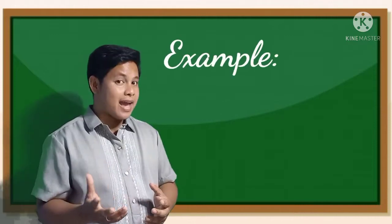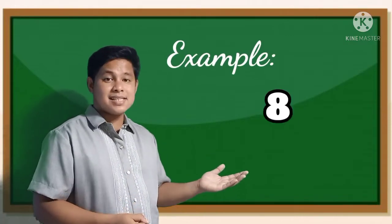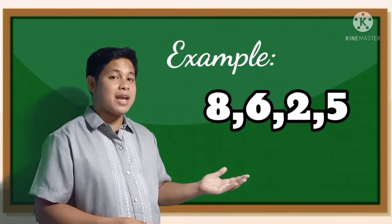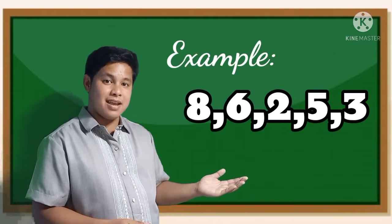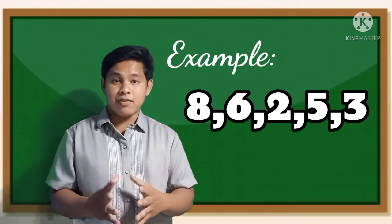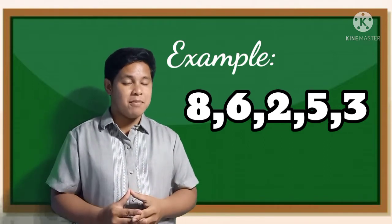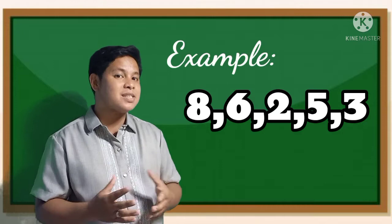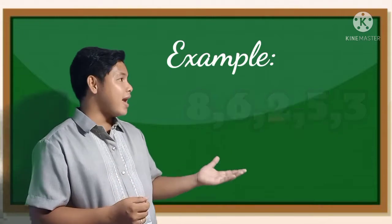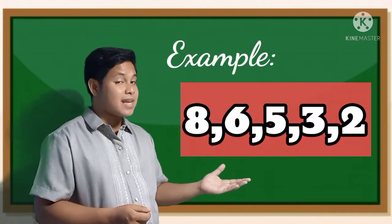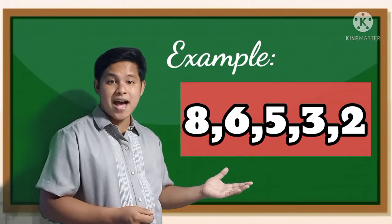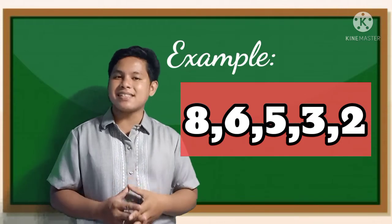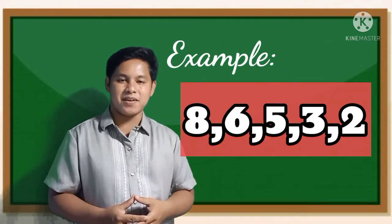Again, I have here 8, 6, 2, 5, and 3. If I arrange these numbers in descending order, it must be 8, 6, 5, 3, and 2. That is the descending order. Can you do it?